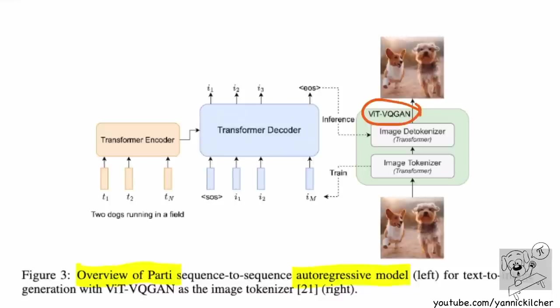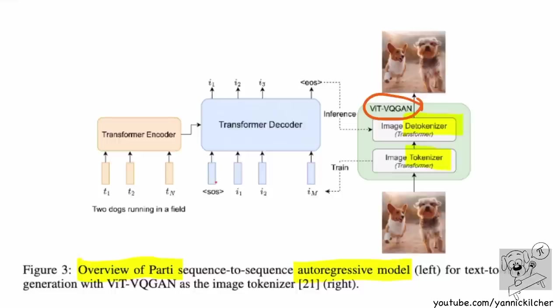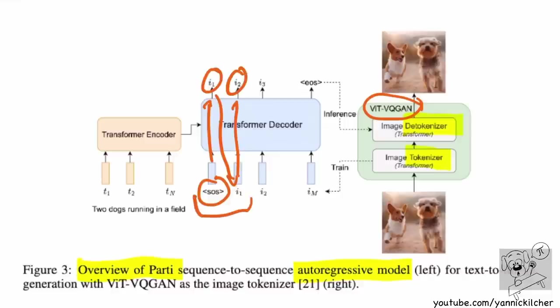On this side you have the VQGAN image encoder and decoder — they call them tokenizer and detokenizer. Autoregressive models work on tokens. In natural language processing, tokens are words or parts of words, and you always try to predict the next token — that's what makes it autoregressive. You pass in a start-of-sentence token, predict the first token, then from those two predict the second, and so on. In images, it's not obvious how to do that, so you first need to get from image space to token space.